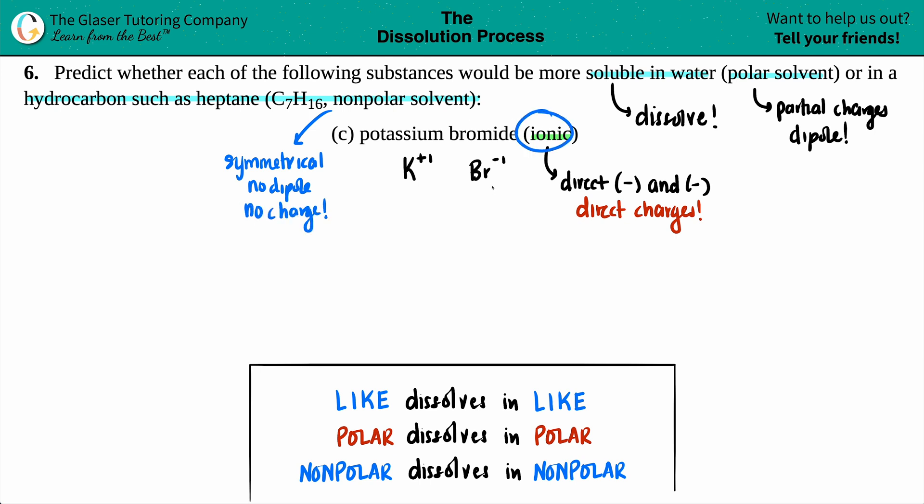So an ionic solute with its direct negatives and direct positives would want to be with a solvent that has some partial charge, has a dipole. So in this case, ionic would go with polar solvents, and the polar solvent that they told us here was water.